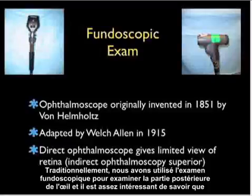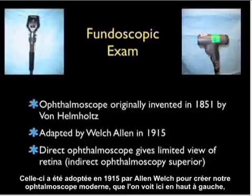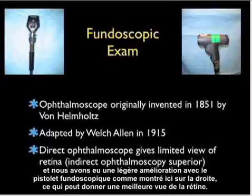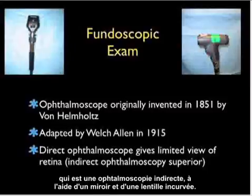Traditionally, we've used the fundoscopic exam to examine the posterior aspect of the eye. We're currently using technology — the ophthalmoscope — originally invented in 1851 by von Helmholtz in Germany. This was adapted in 1915 by Welch Allen into our modern ophthalmoscope, with a slight improvement via the fundoscopic gun which may give a better view of the retina. However, direct ophthalmoscopy gives a limited view of the retina compared to indirect ophthalmoscopy using a mirror and curved lens.